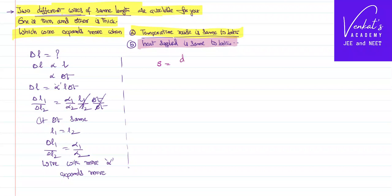Specific heat of a material is defined as amount of heat required to raise the temperature of unit mass of substance by 1 degree centigrade. From that I can write dQ equal to msΔT.